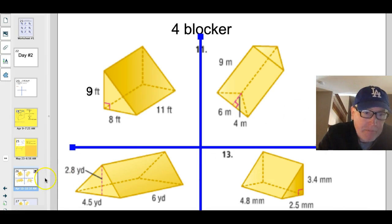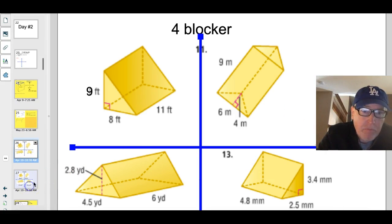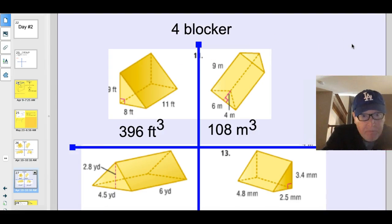All righty. Here we go. See how you did. First one. Well, you should have done 8 times 9 times 11 for 396. Did you divide by 2? If you didn't get 396, you probably got something close to 800. You have to divide that answer by 2 because it's a triangular prism.